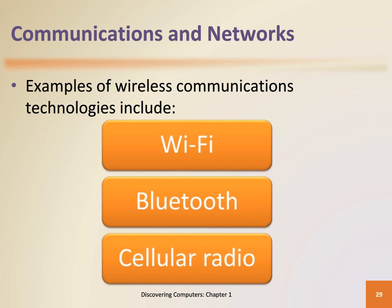We often opt for wireless communications. Wireless communications technologies include Wi-Fi, Bluetooth, and cellular radio. Wi-Fi uses radio signals to provide high-speed internet and network connections. Bluetooth uses short-range radio signals to enable Bluetooth-enabled computers and devices to communicate. Cellular radio uses the cellular network to enable high-speed internet connections to devices such as smartphones.